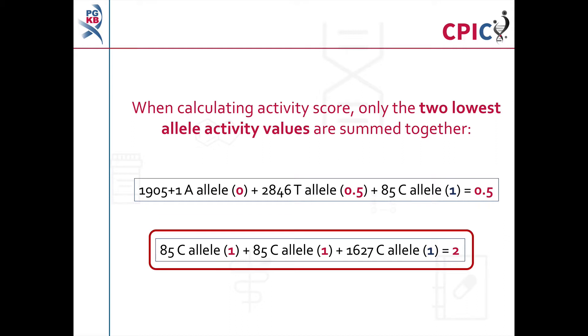Some patients may have multiple normal function variants. This rule also applies in these cases. If a patient carries three normal function alleles, the activity score would still be 2.